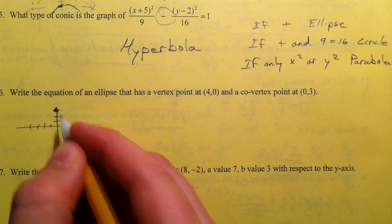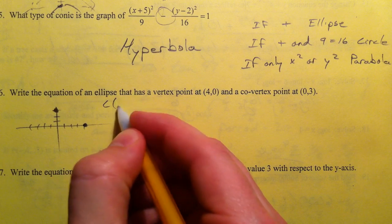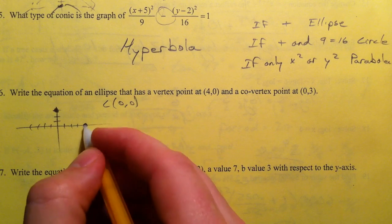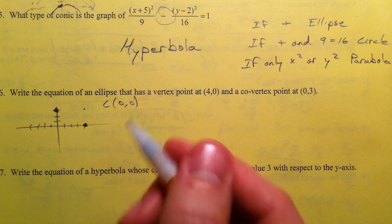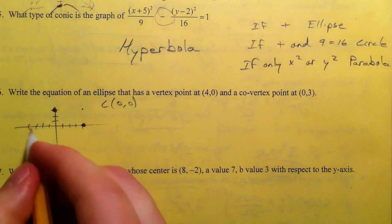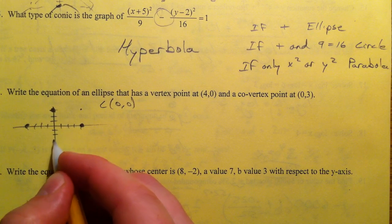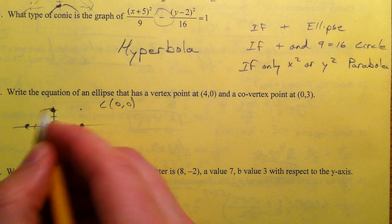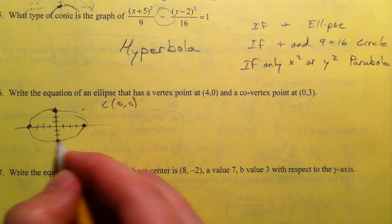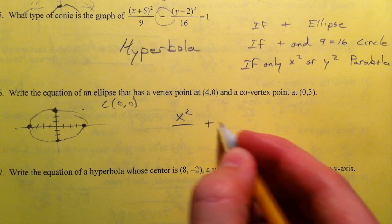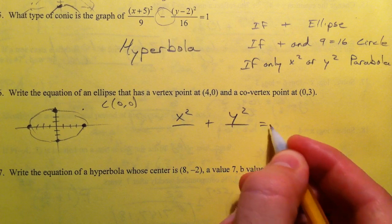Because you could have the center be at 4, 3 but we're going to go on the assumption that it's not. So this is what our ellipse looks like from the center at 0, 0 so we're going to put x squared plus y squared for an ellipse.